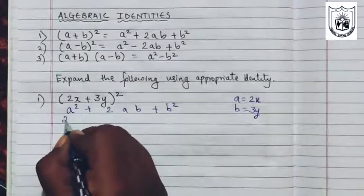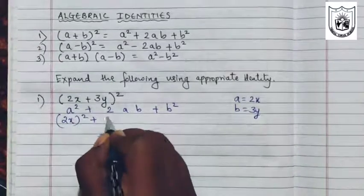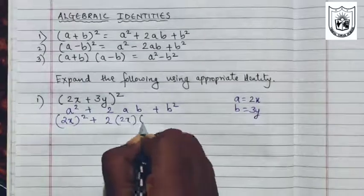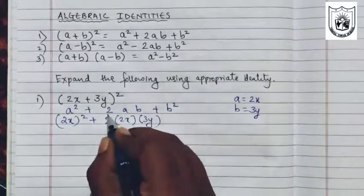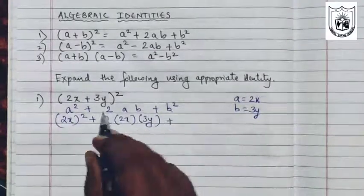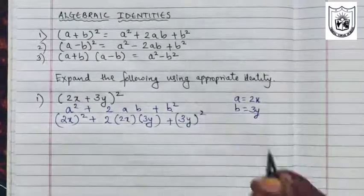A here is 2x, 2x the whole square plus 2, a is 2x, b is 3y. Since they are multiplied, you can put a dot here or a bracket plus b square that is 3y the whole square.